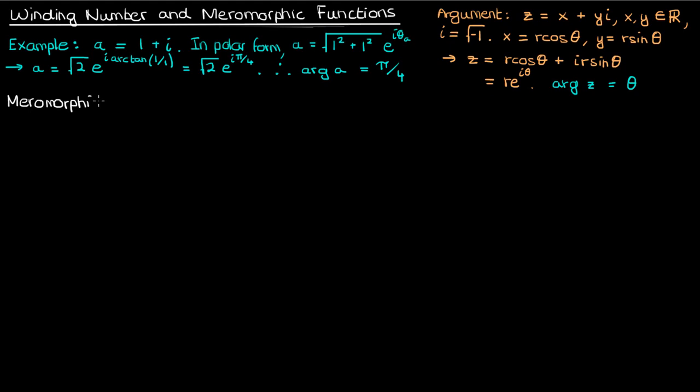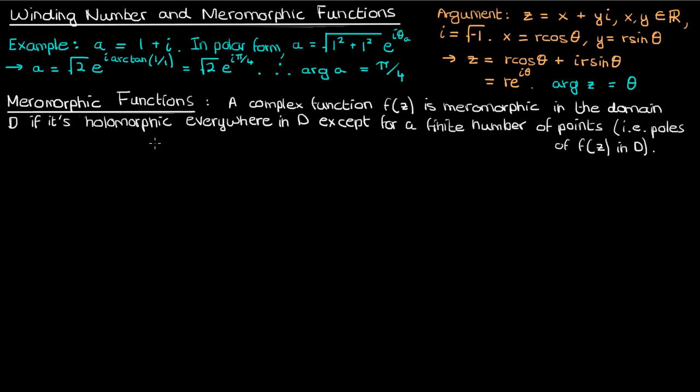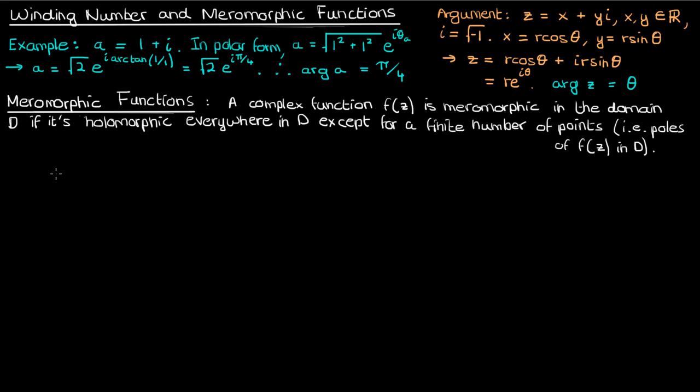Let's now move to the idea of a meromorphic function. A complex function f is meromorphic in the domain d if it's holomorphic everywhere in d — that is, complex differentiable in d — except for a finite number of points, which would be the poles of f in d. So a meromorphic function is allowed to have a finite number of discontinuities; it just can't be discontinuous over an entire region in d, because that would be infinite discontinuities.